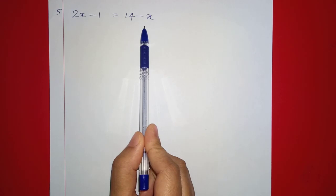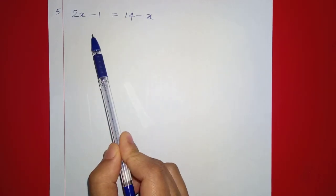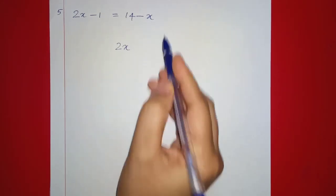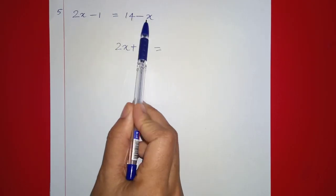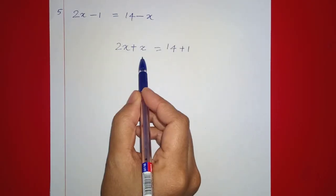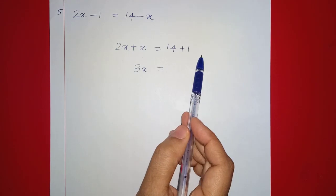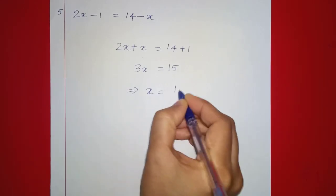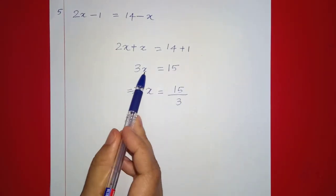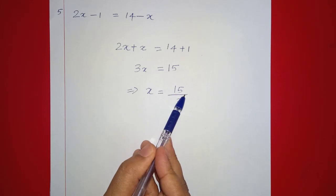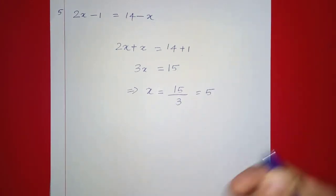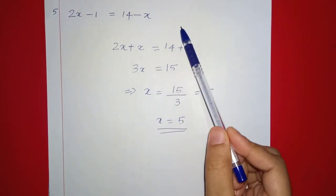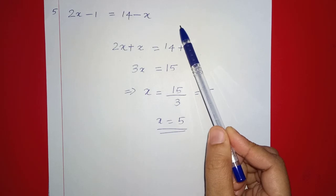Next: 2x minus 1 equals 14 minus x. We put x on one side: 2x plus x equals 14 plus 1, so 3x equals 15, which implies x equals 15 by 3. Dividing, x equals 5. We substitute x equals 5 to verify left-hand side equals right-hand side.